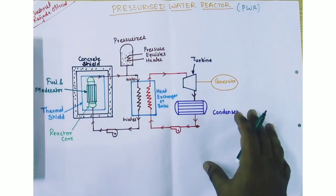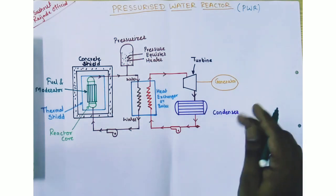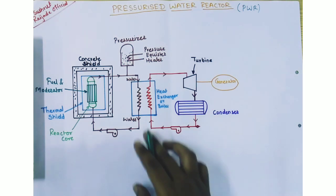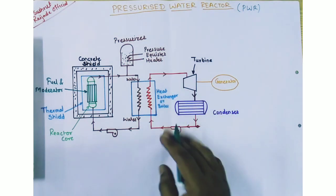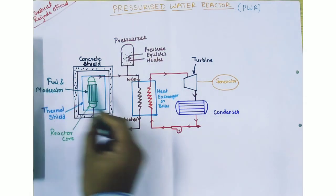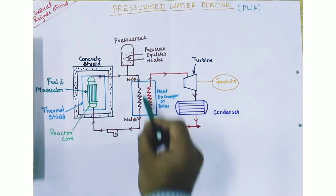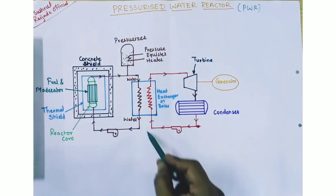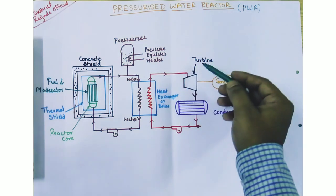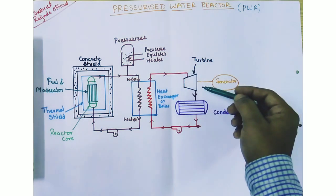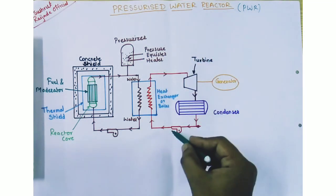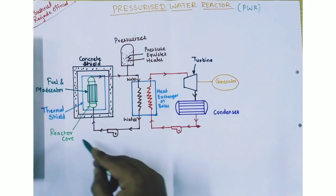In this video we are going to learn the pressurized water reactor PWR power plant. In this PWR power plant there are two circuits: first one is a primary circuit, and this is a secondary circuit which is conventional — it produces steam and that steam passes to the turbine which produces electricity.